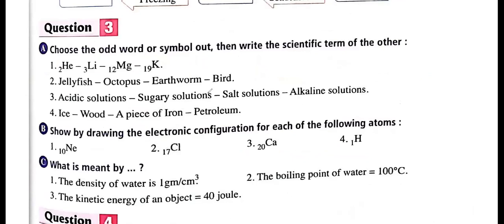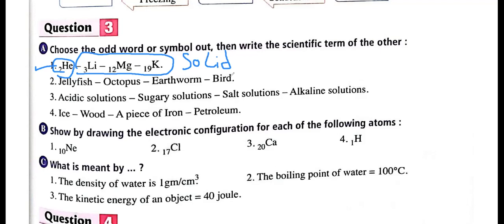Choose the odd word and write the scientific term for the others. First group: helium, lithium, magnesium, and potassium. All of these are solid except helium, which is a gas. So the odd one is helium and the rest are solids. Second group: jellyfish, octopus, earthworm, and bird. All of jellyfish, octopus, and earthworm have soft bodies. The bird has a vertebral column — internal support. So the odd one is bird and the rest have soft bodies.